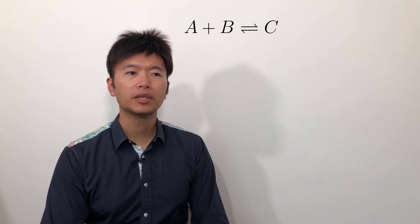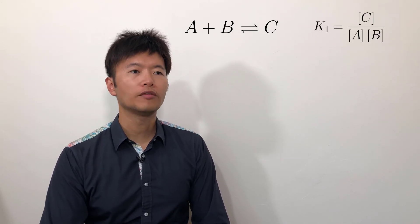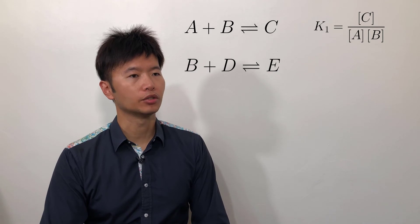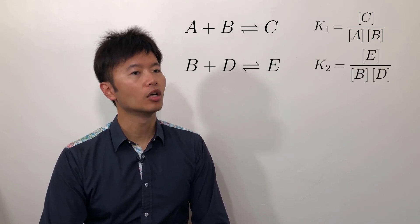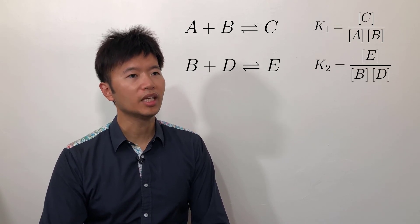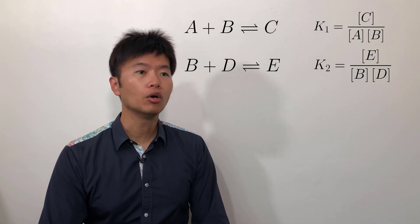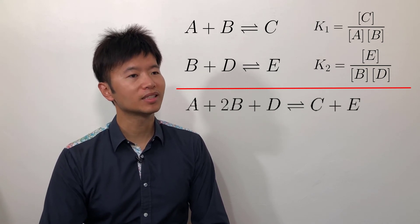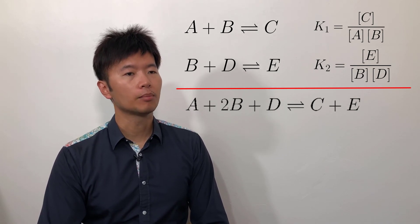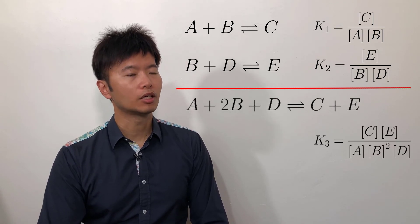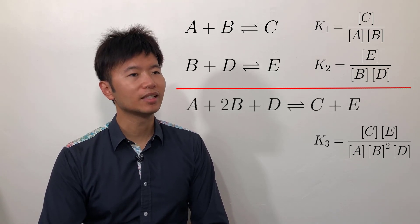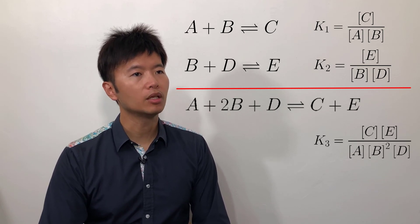One more case to consider. If our first reaction is a plus b yields c, we can write the law of mass action that k1 equals c over a times b. For the second reaction, b plus d yields e, the law of mass action k2 will be e over b times d. Now, if we add those two reactions, we end up with a plus 2b plus d on the reactant side and c plus e on the product side. The equilibrium expression for the overall reaction would be k3 equals c times e over a times b squared times d.